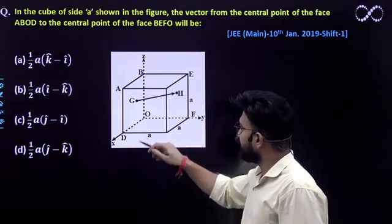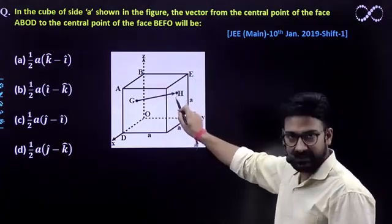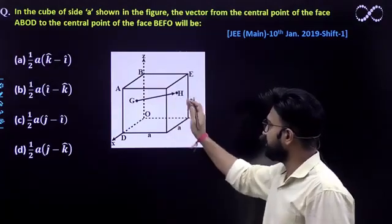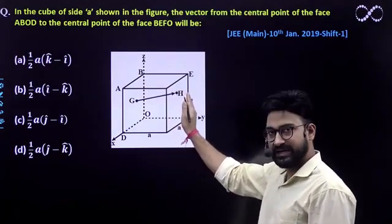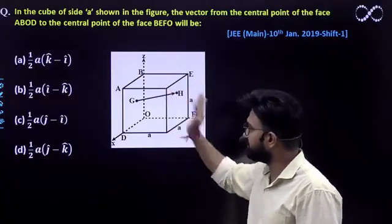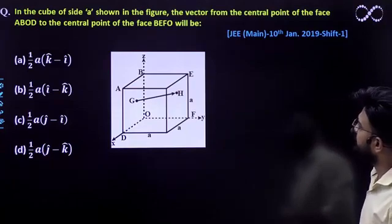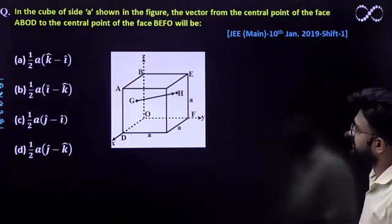Again, there's another side BEFO, whose center is at point H. Mind you that it's at the center, it's shown slightly to the side. Don't think that it's a point given on the side. Let's take it as the center. You have to find out what is the position vector of G and H.